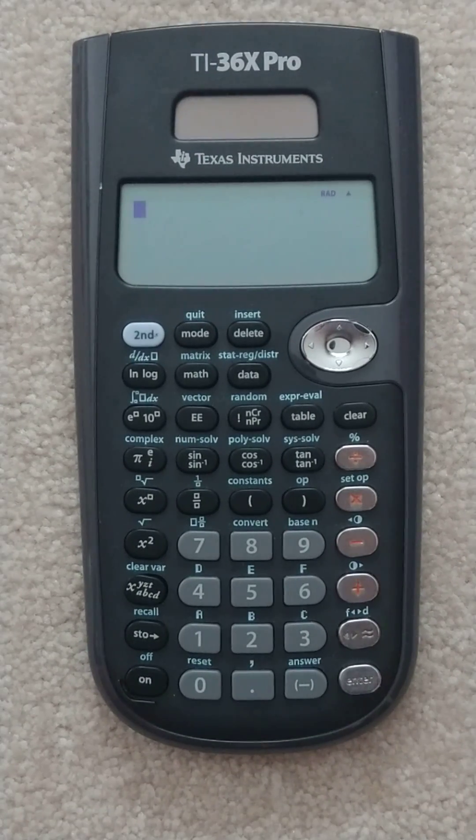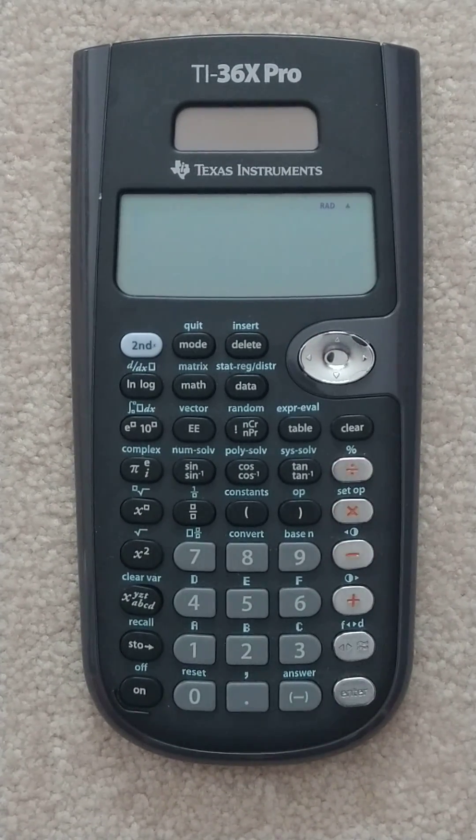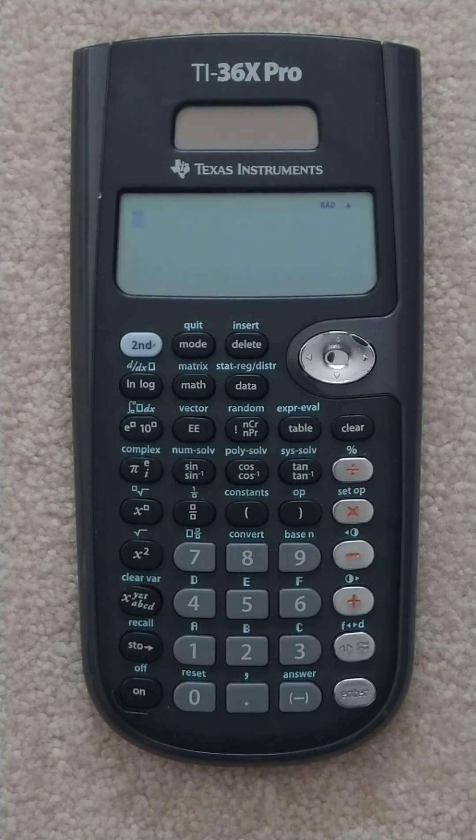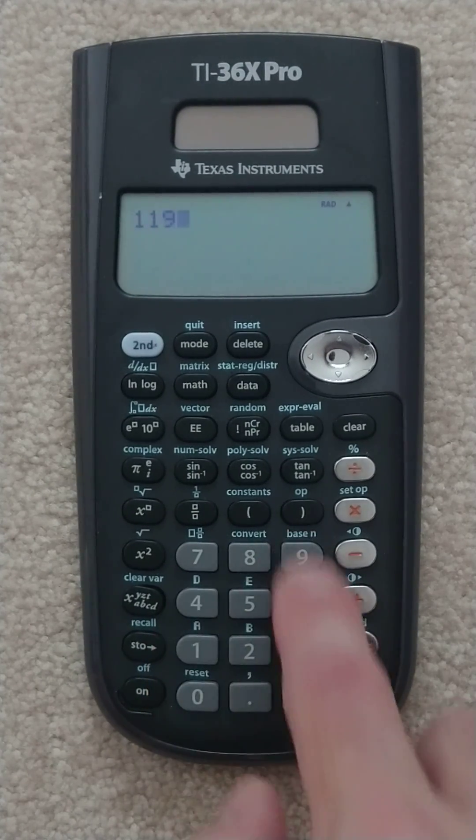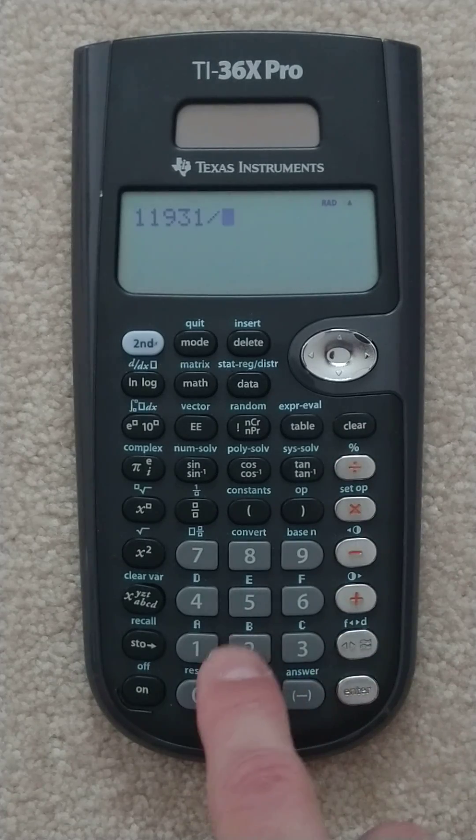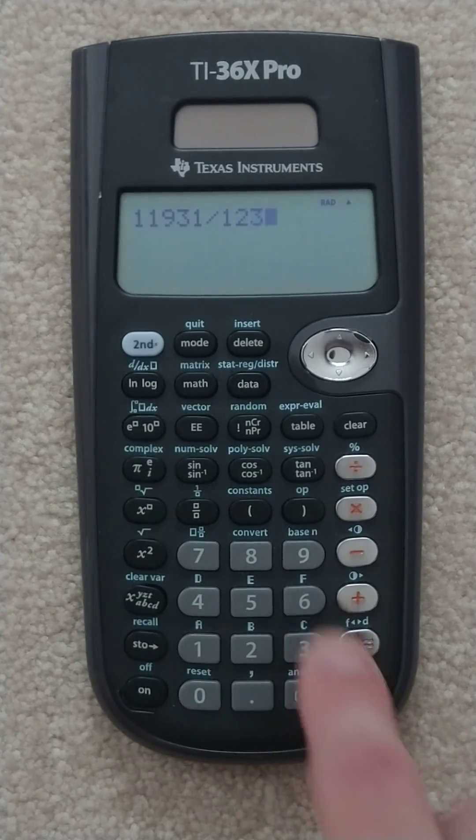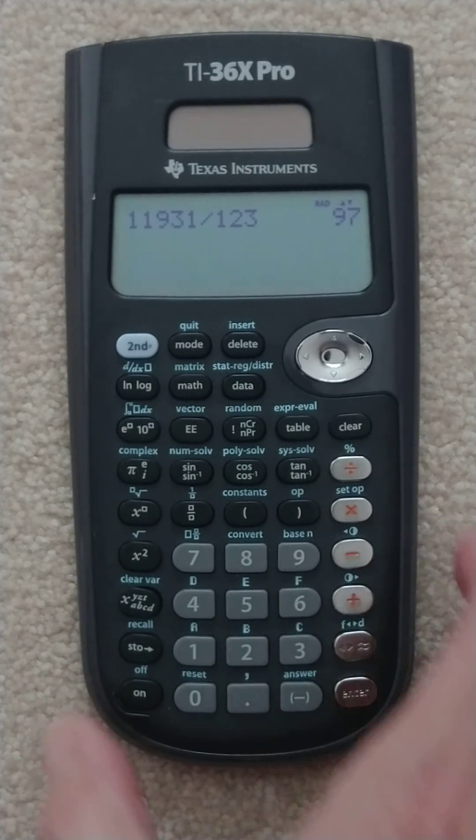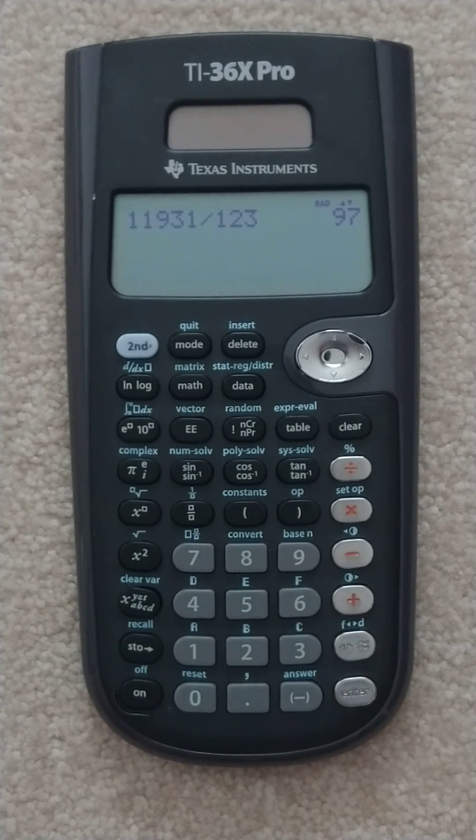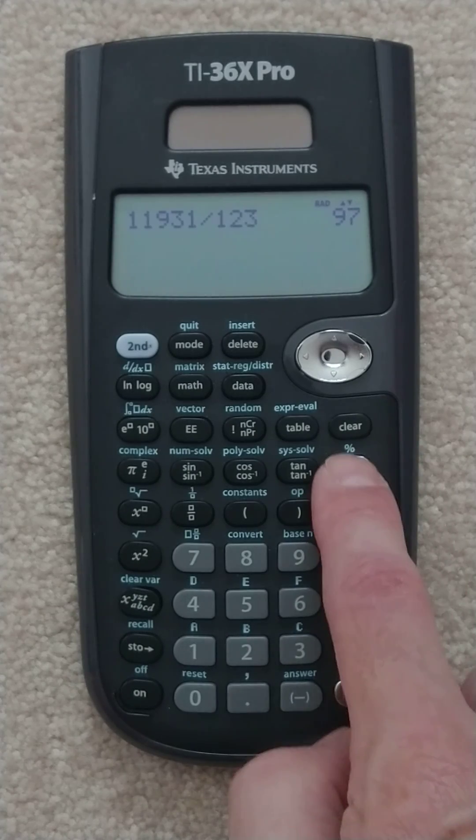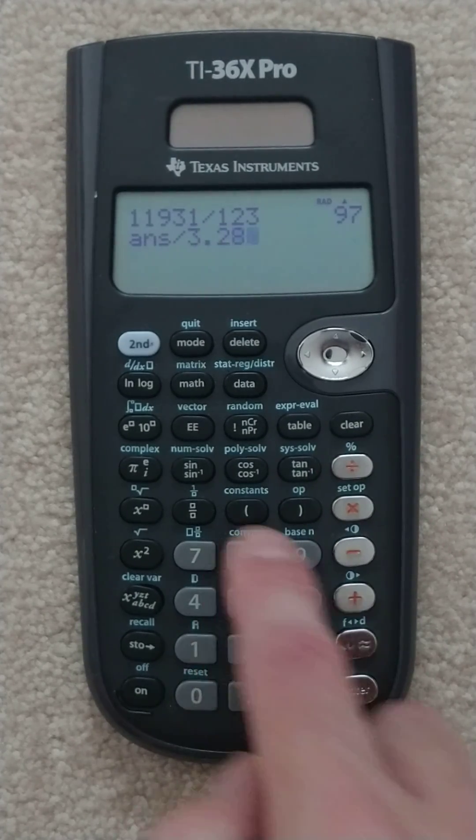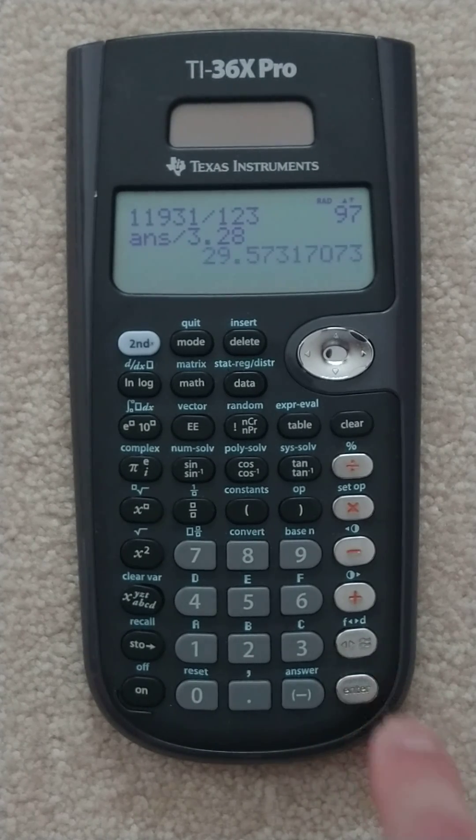Alright, so let me get in there a little bit better. TI-36X Pro. We do 11,931 divided by 123 seconds and get our result, 97. And I need that in, that's feet per second, I need meters per second. So I'm going to divide that by 3.28 because there's 3.28 feet per meter. And we get our answer there.